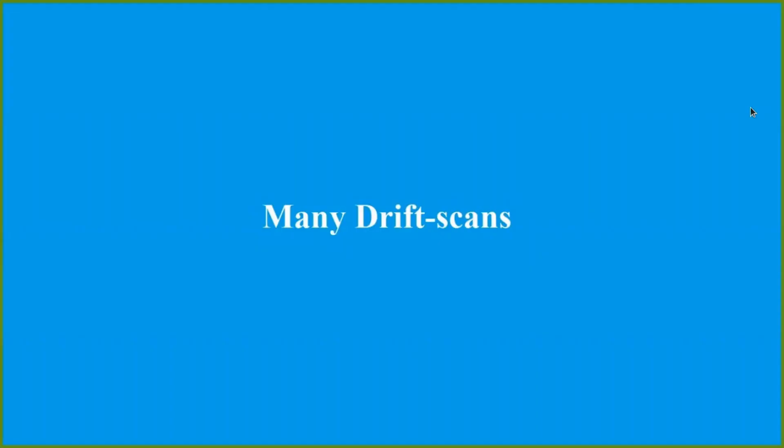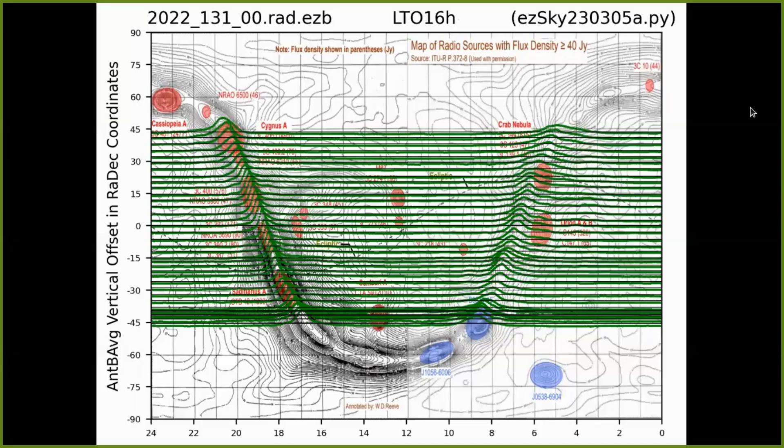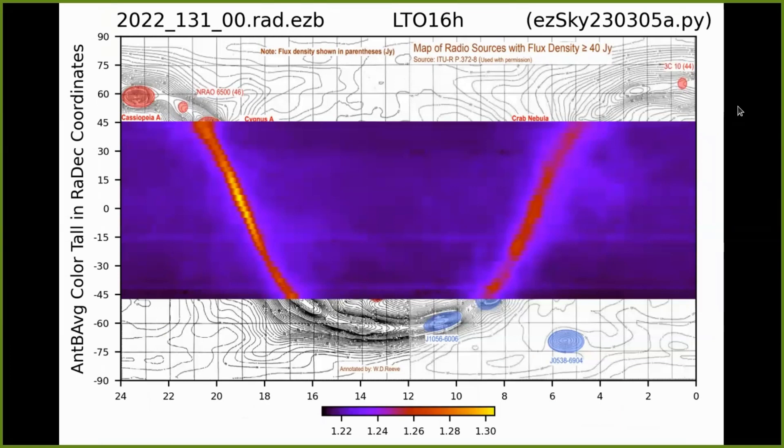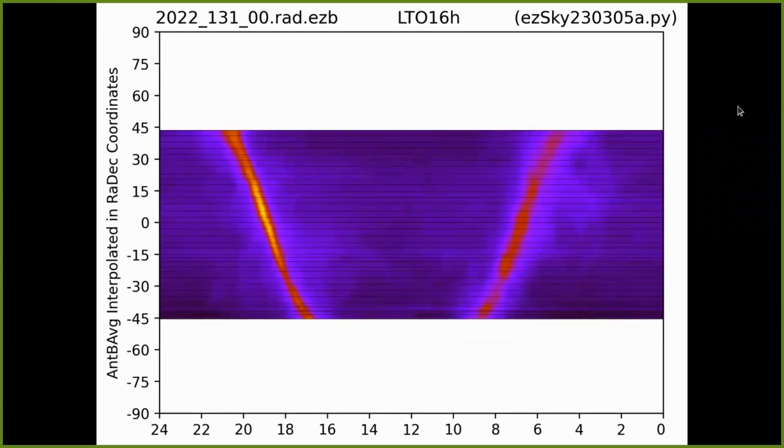That was recording one drift scan, but we can record many more with each drift scan with a slightly different elevation of the antenna. Again, the bumps in the data seem to align with the galactic plane. The program can assign brighter colors to the higher values, and the EZRA software can smooth that data.